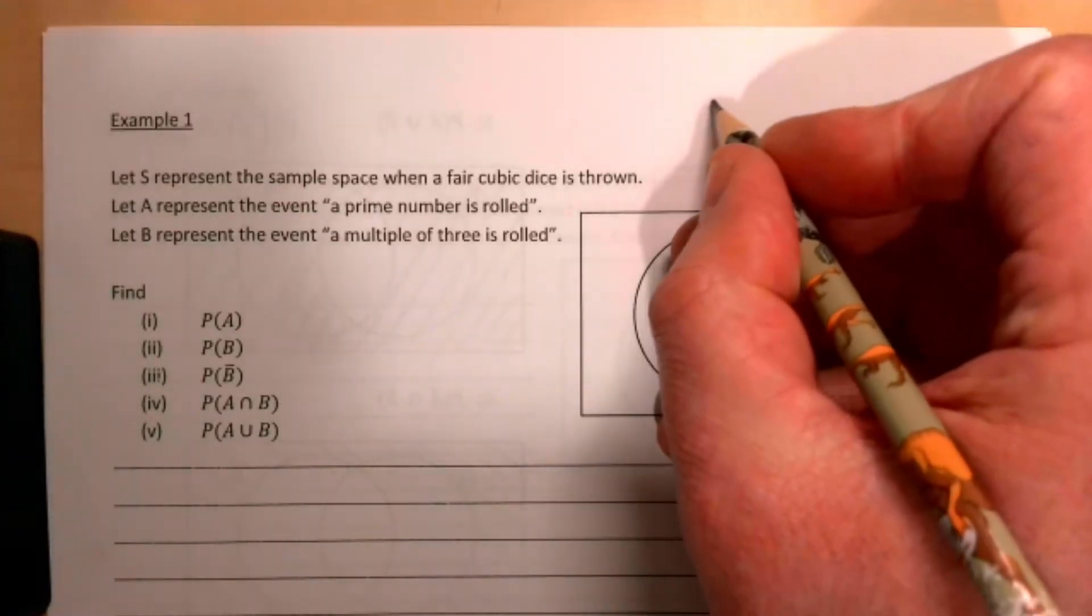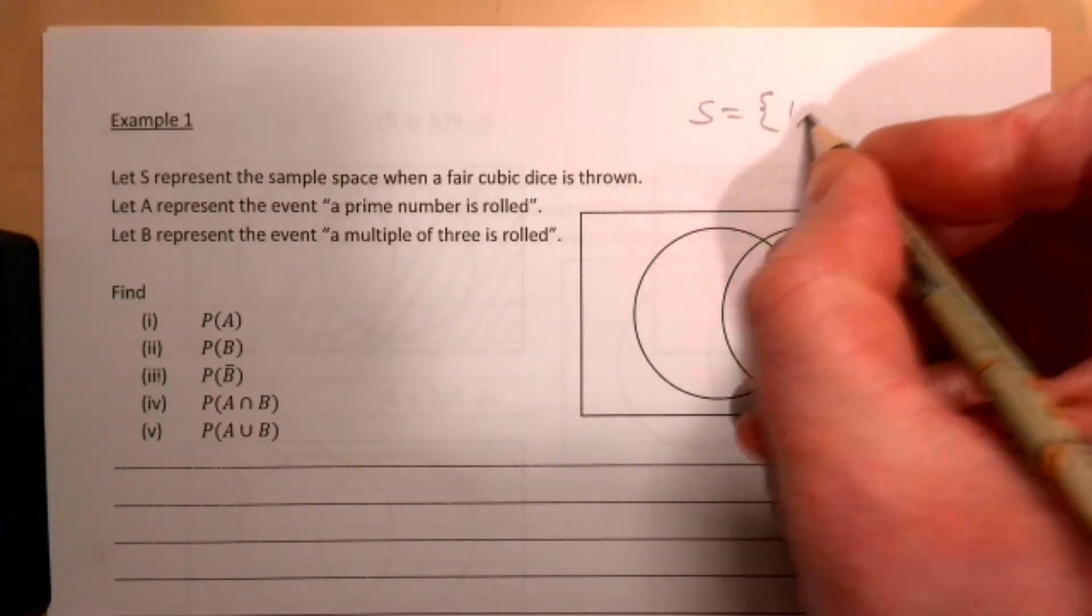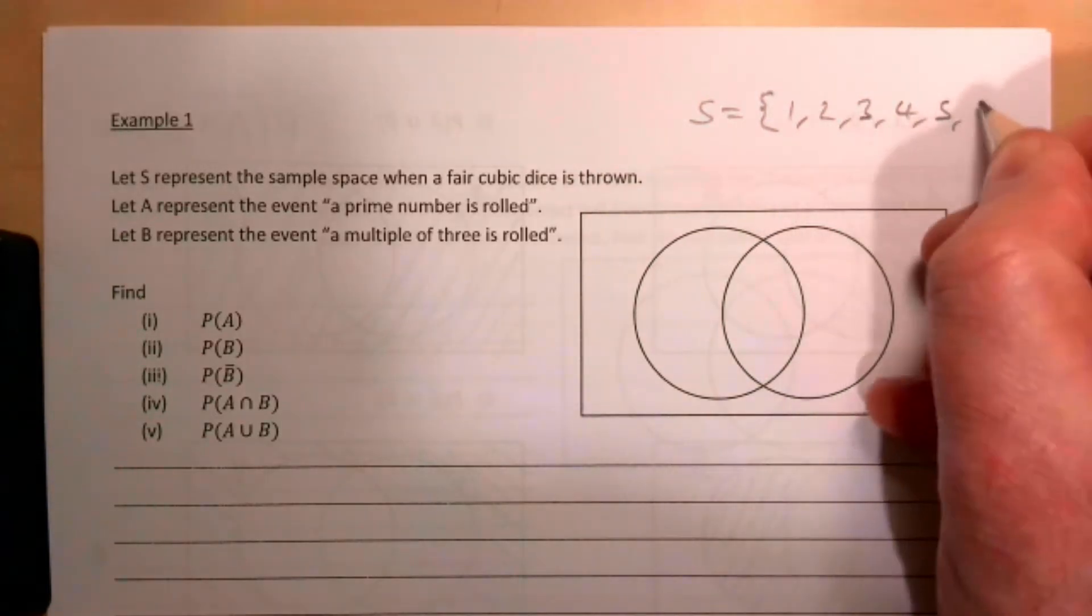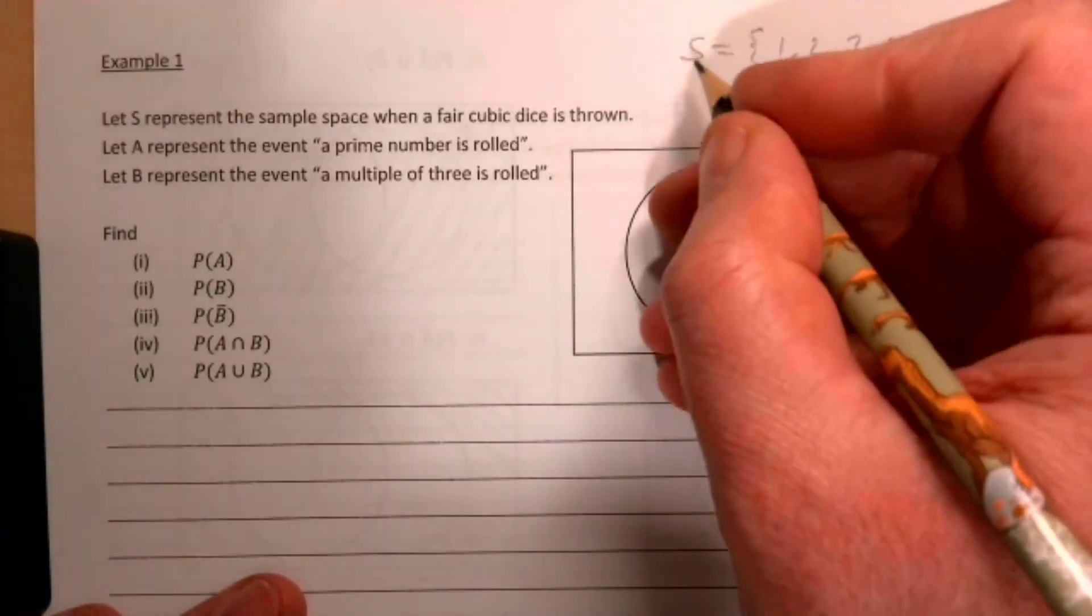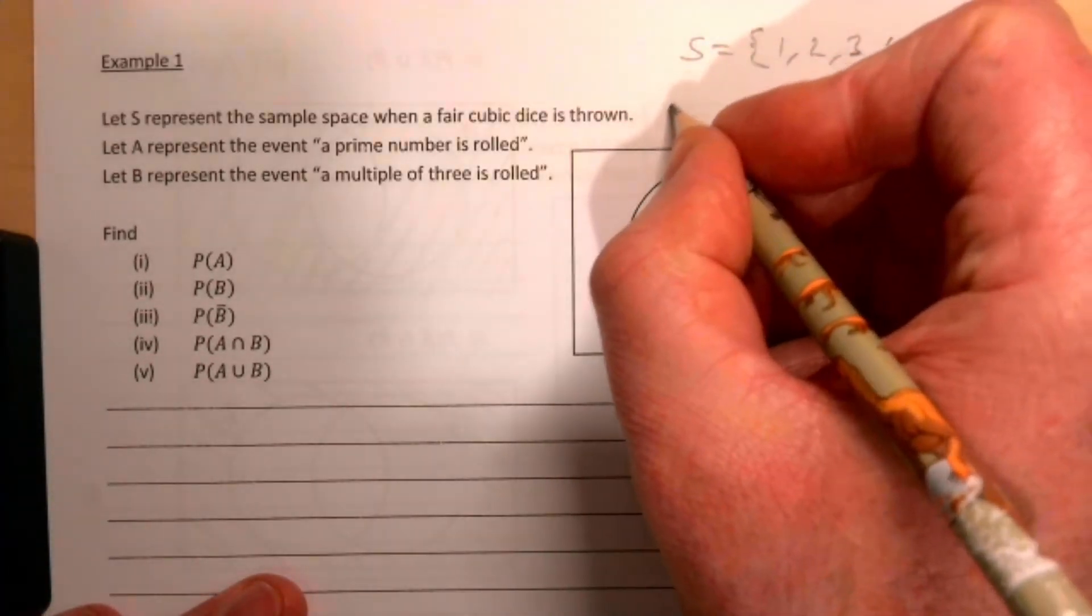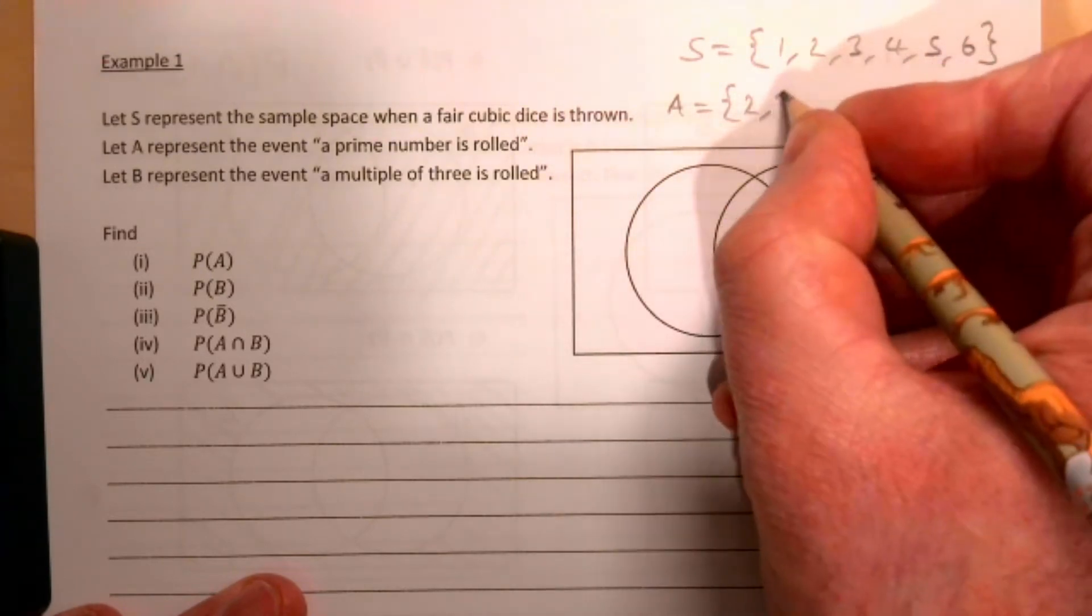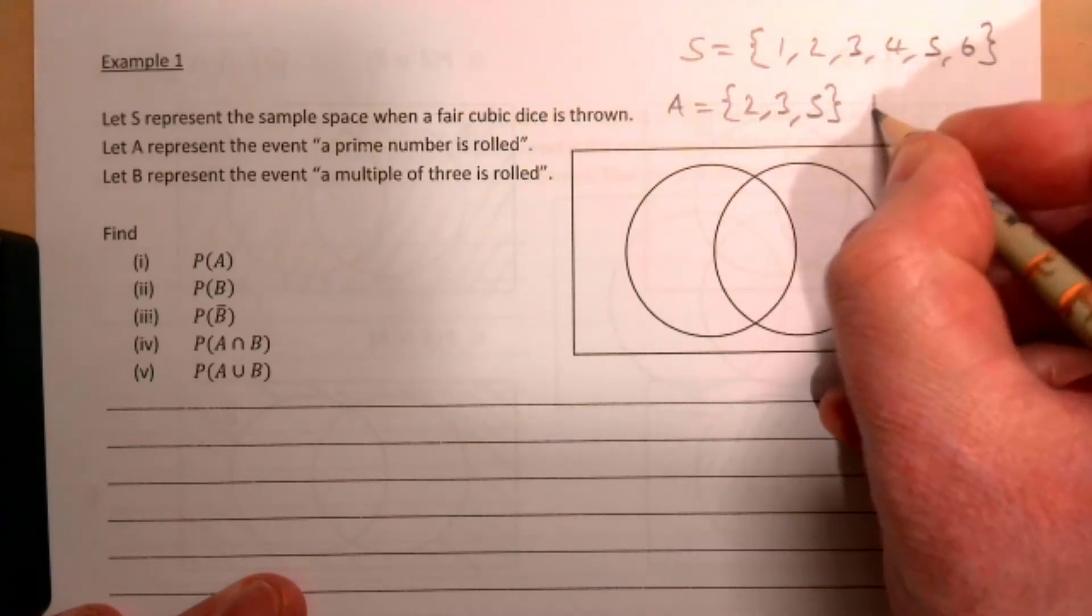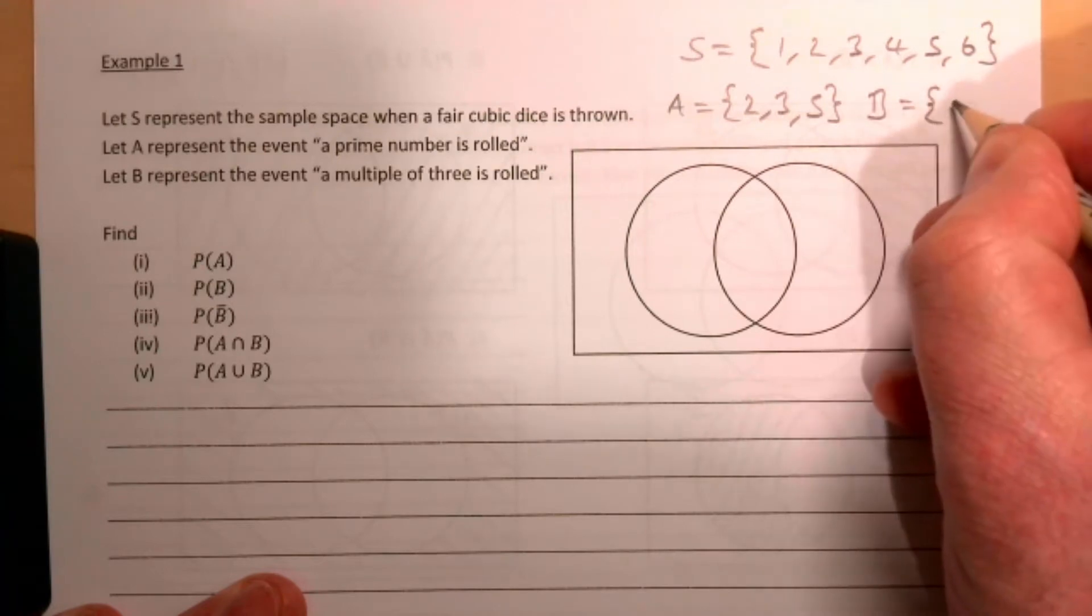So let's write down our three options here to keep ourselves right. In terms of everything we can have 1, 2, 3, 4, 5, and 6—those are our options when rolling the dice. Part A, a prime, so what are our primes here? We get 2, 3, or 5. Part B, a multiple of three, so that's going to be 3 and 6.